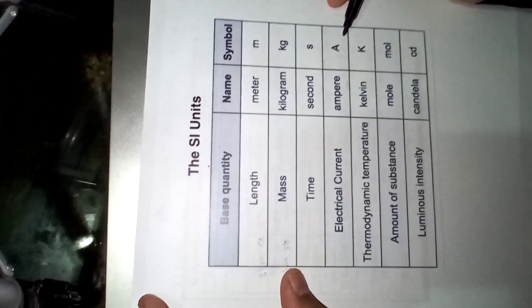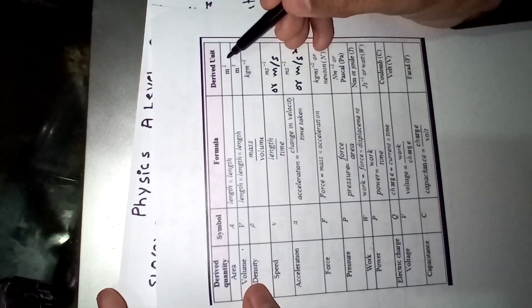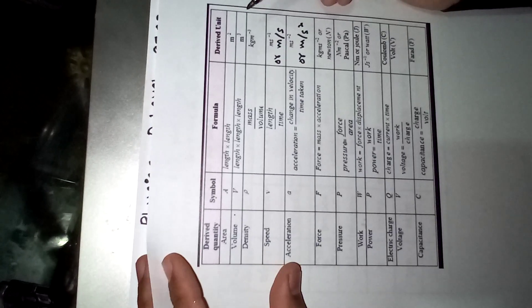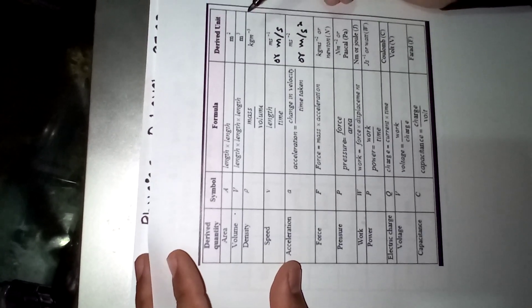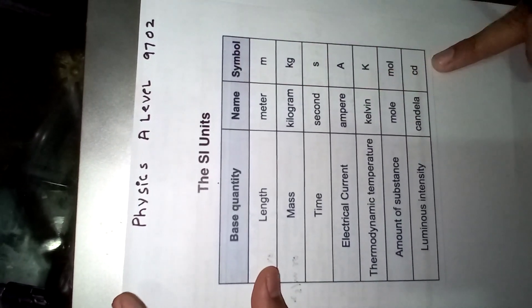The seven base units are meter, kilogram, second, ampere, kelvin, mole, and candela. We are going to represent all derived units in terms of these seven base units.